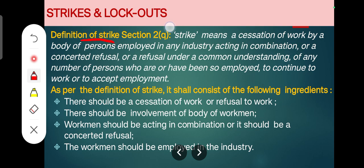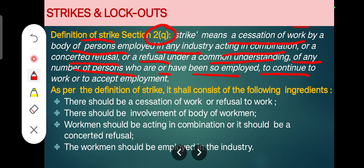The definition of strike under the Industrial Dispute Act is given in Section 2(q) — you can remember 'q' with the word 'quit.' Strike means whenever workers cease work — there is a cessation of work — not by a single individual but by a body of persons employed in any industry, acting in combination, with a concerted refusal or a refusal under a common understanding to work, by any number of persons who are or have been so employed.